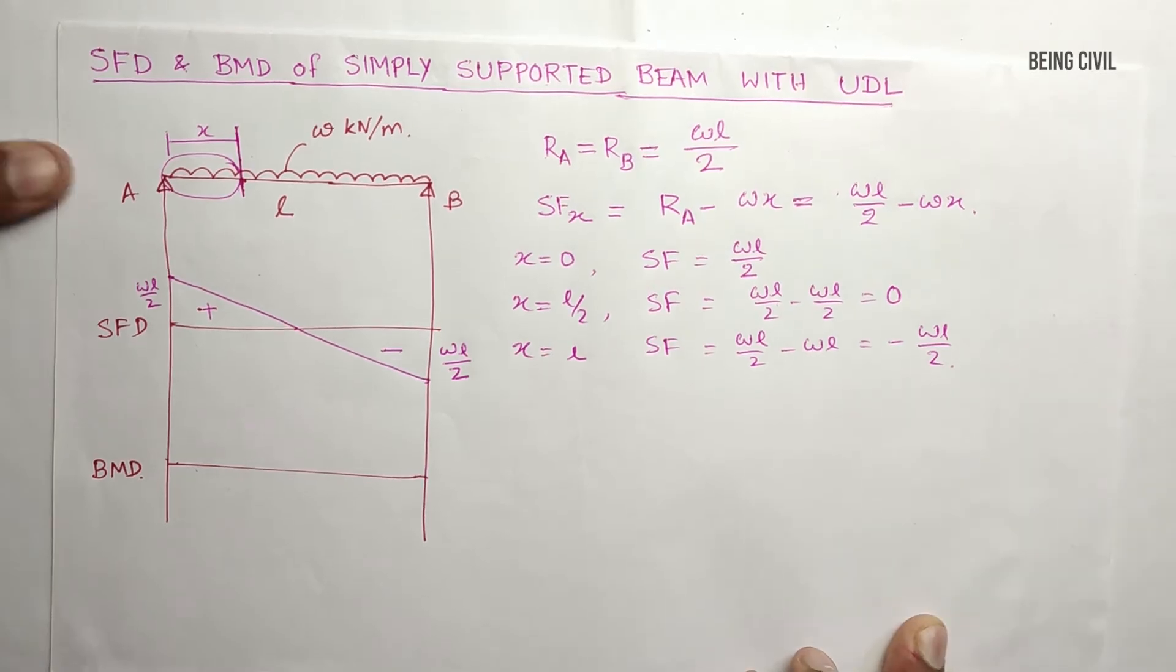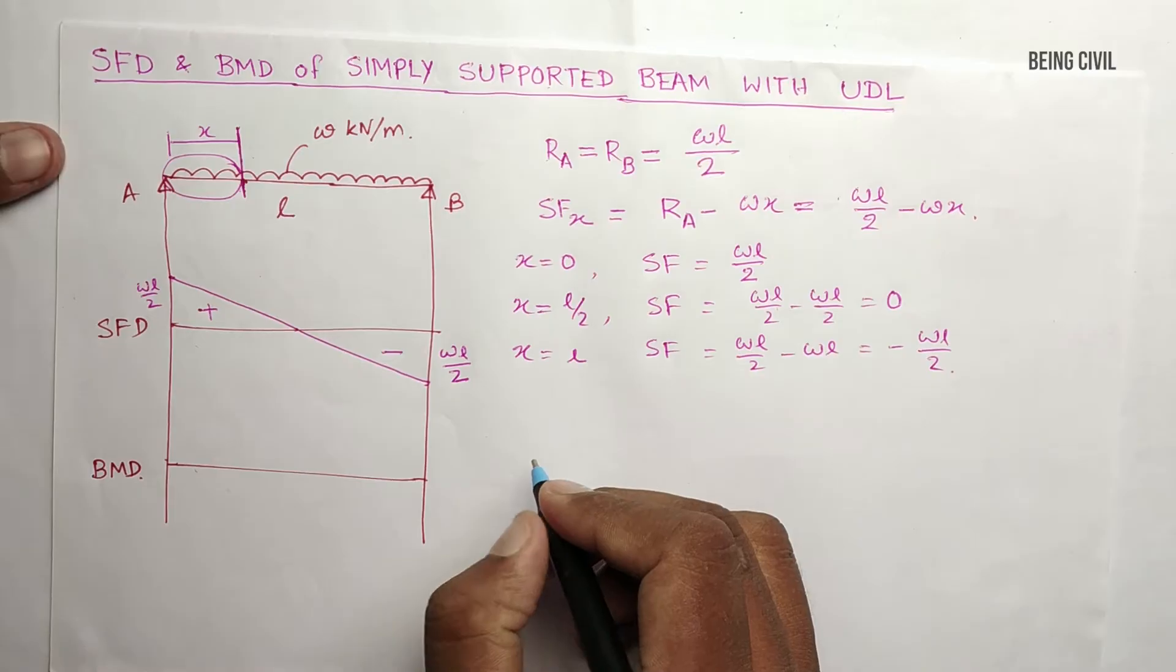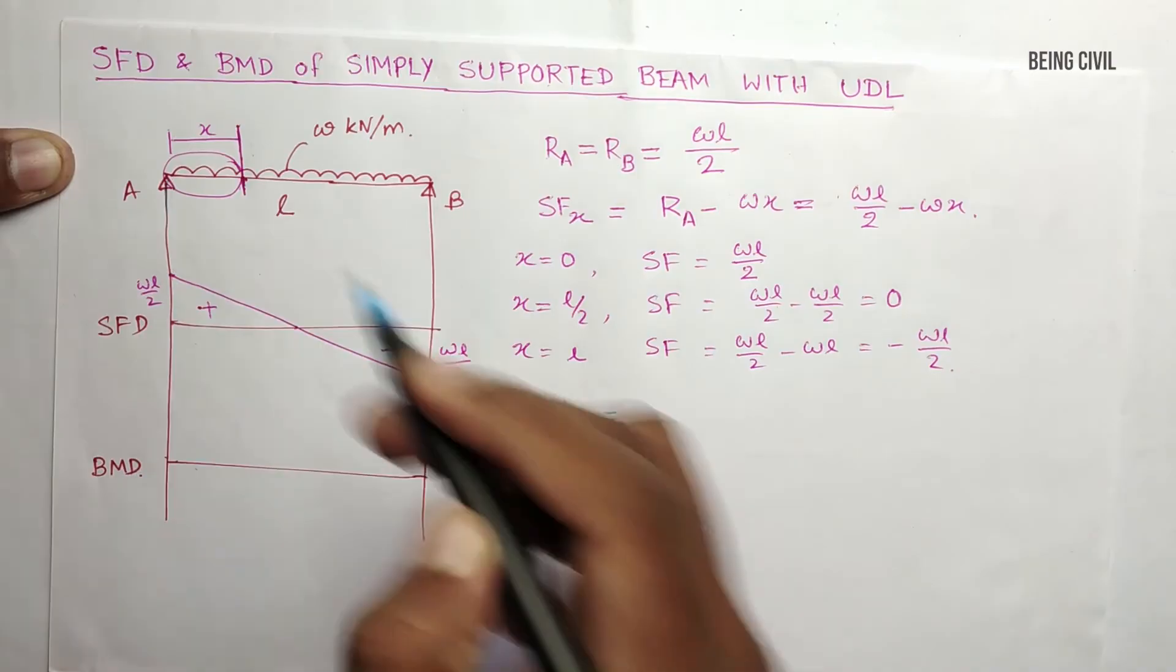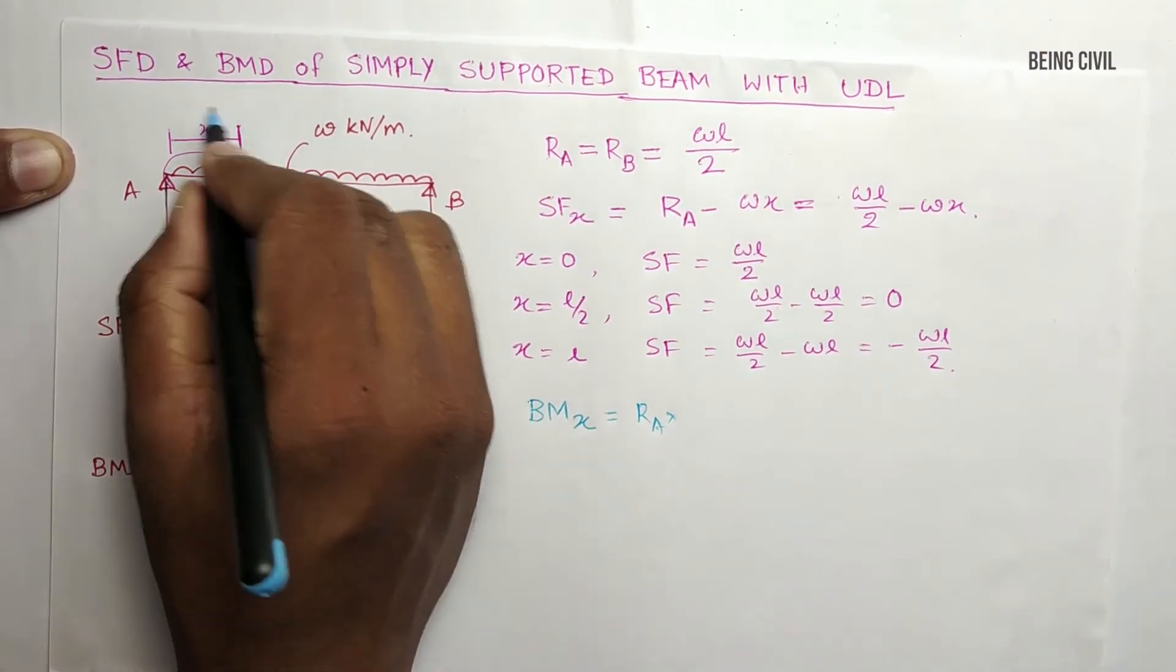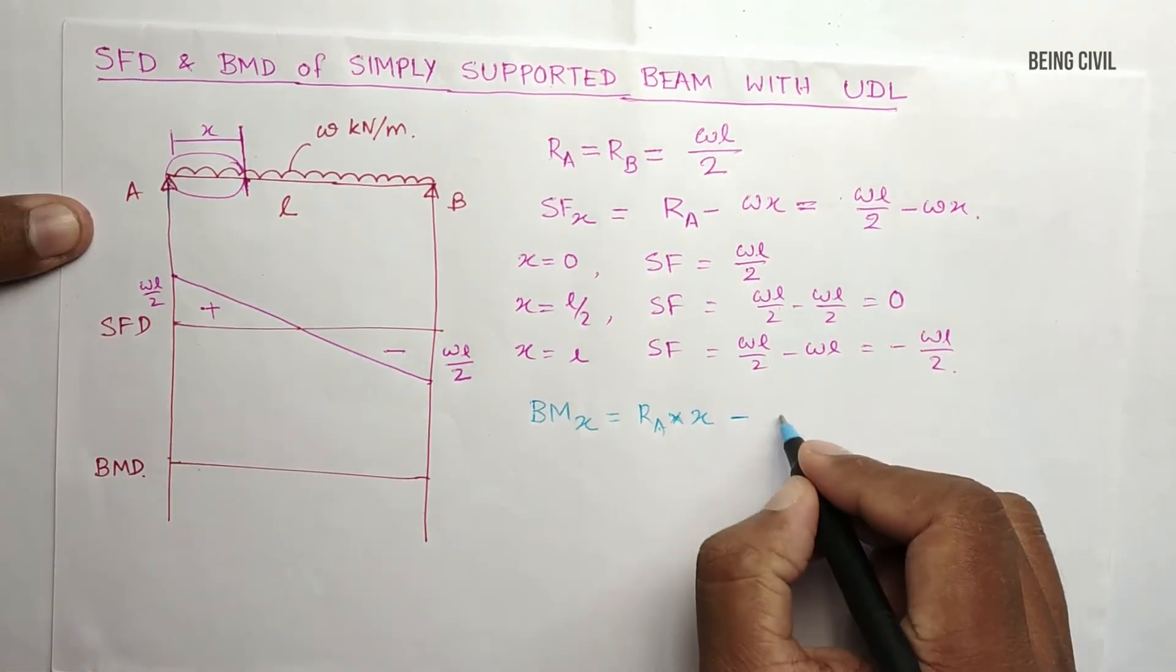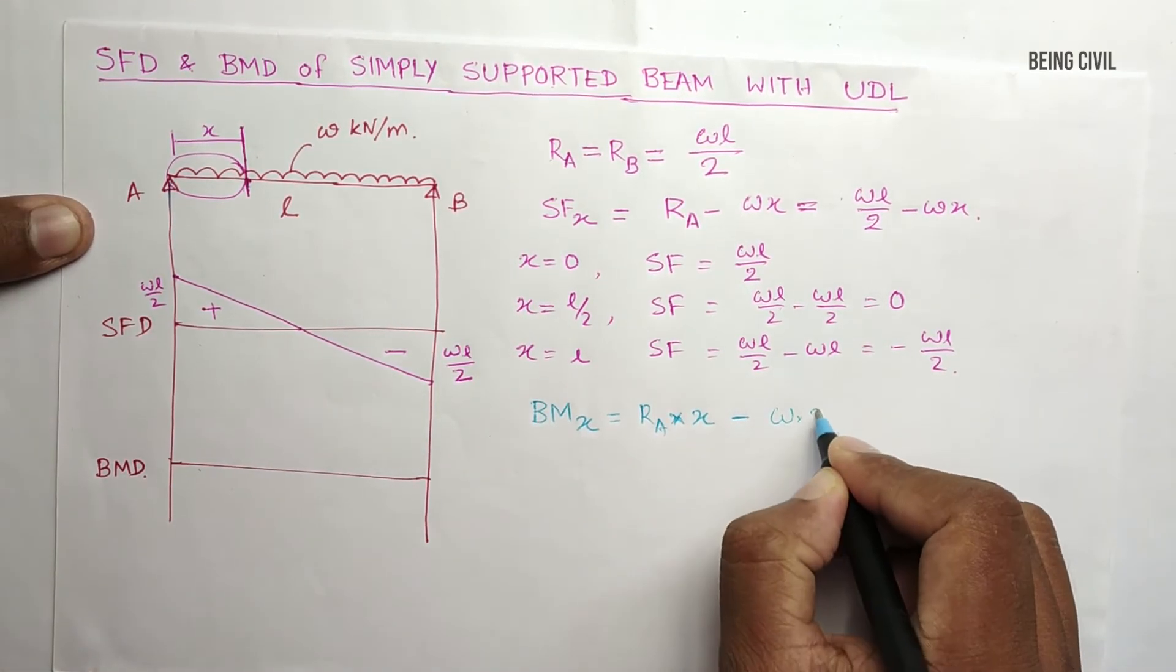Now coming to the bending moment diagram. Bending moment at a distance of X here is RA into the distance, which is X, minus moment of this force. The total force is W into X.